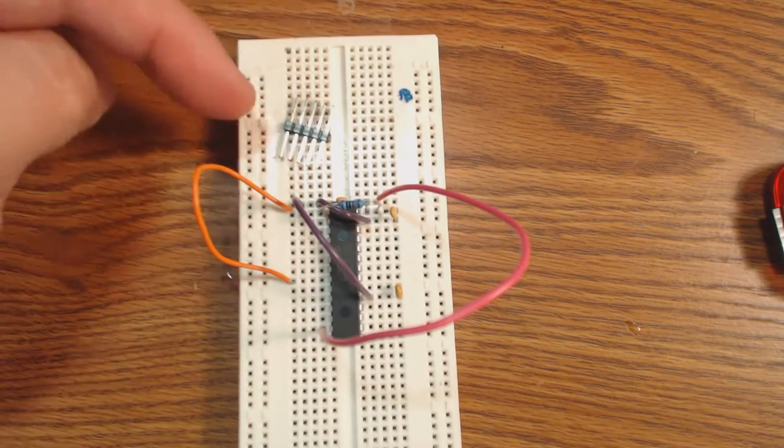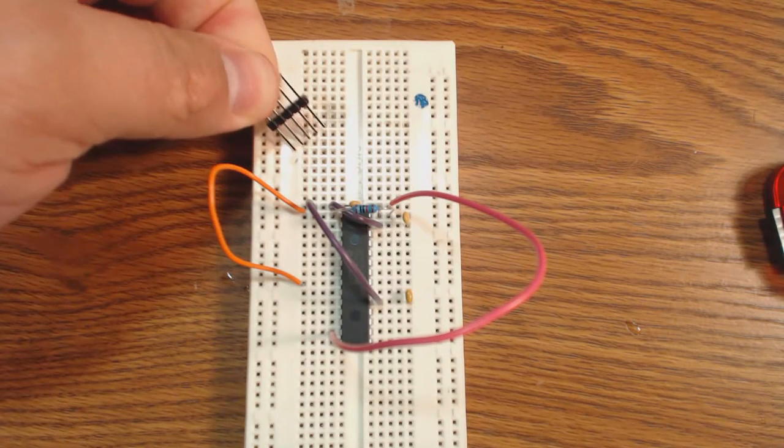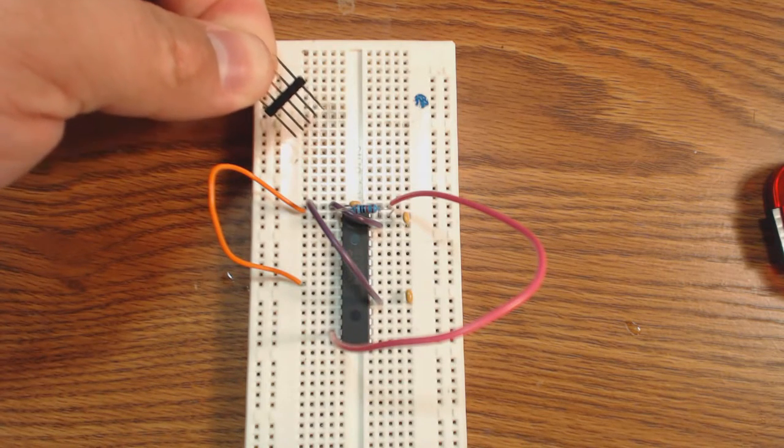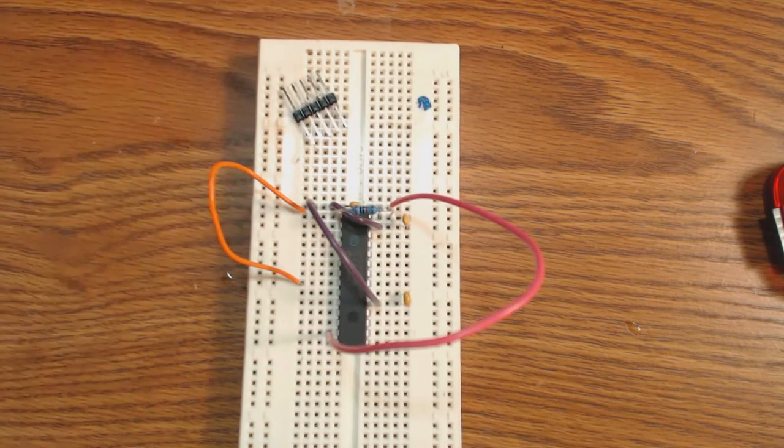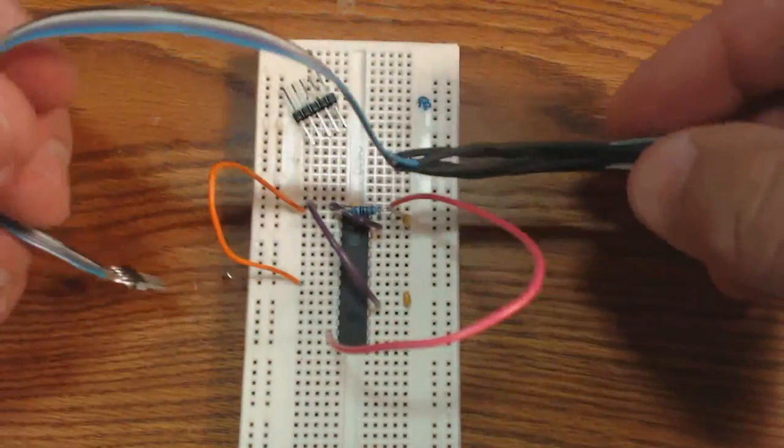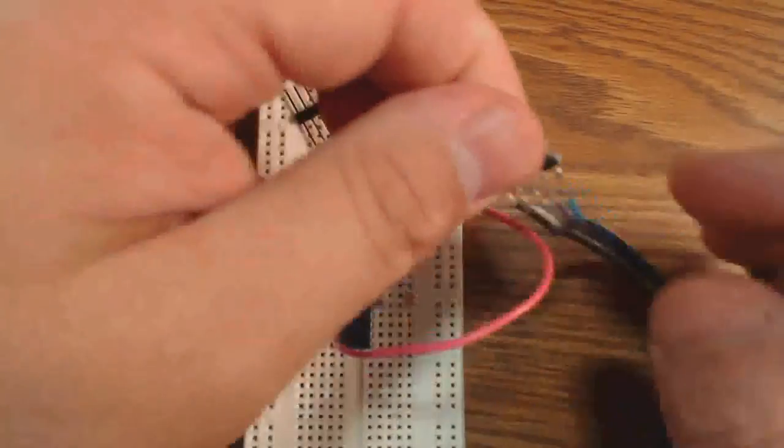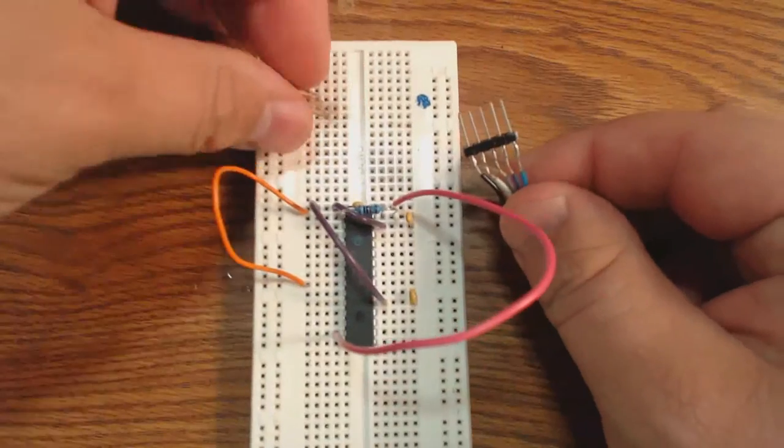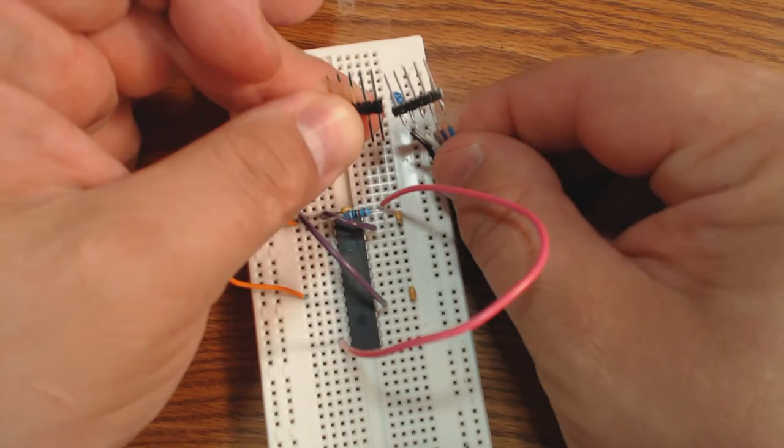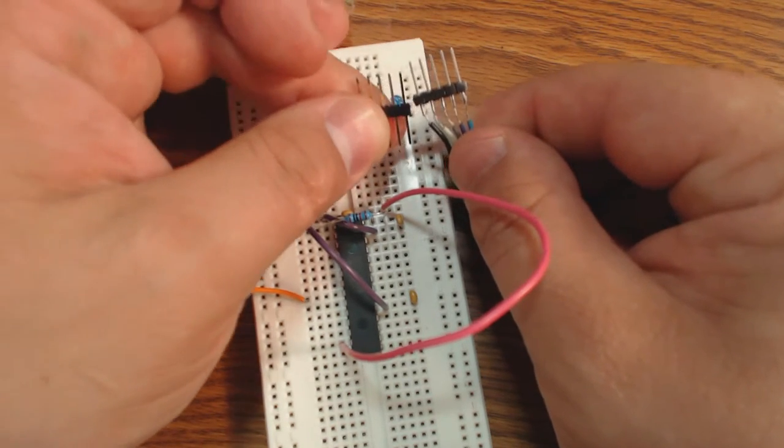But how do you hook up a programmer to a breadboard? So you have two choices. The first is a 0.1 inch header that looks like this. This is actually a specialty one that the pins on both sides are extra long. Digikey and Newark and whatnot sell these. The other option is a cable like this. This is a cable that I made myself.